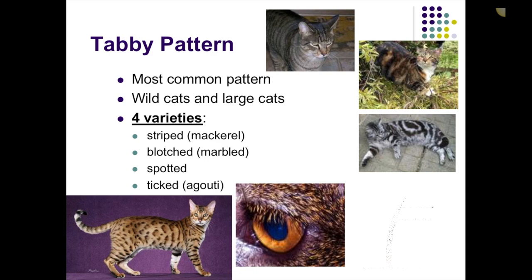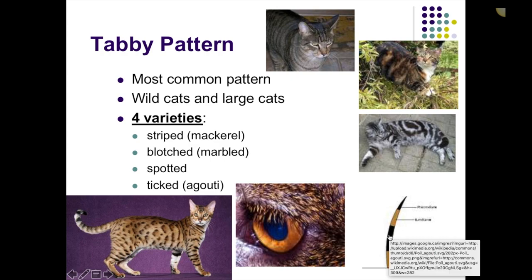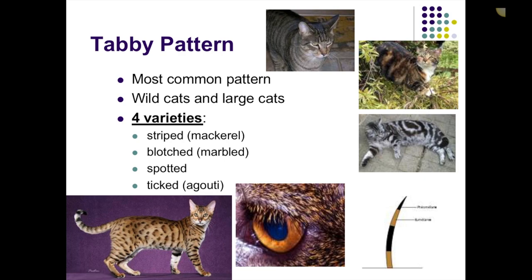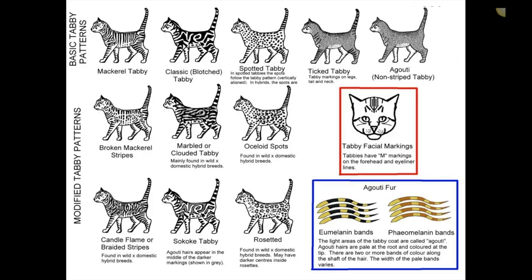Ticked tabbies are kind of interesting — at first glance their coat might look like a solid color. The example would be an Abyssinian, which always has ticked tabby coats. What it is, in fact, is that they have either agouti or non-agouti hairs whereby the hairs themselves are banded with different colors. So looking at the hair itself, it has a striped pattern throughout. Whereas other tabbies have a mixing of white, black, or orange hairs, ticked tabbies have striping to their individual hairs specifically.